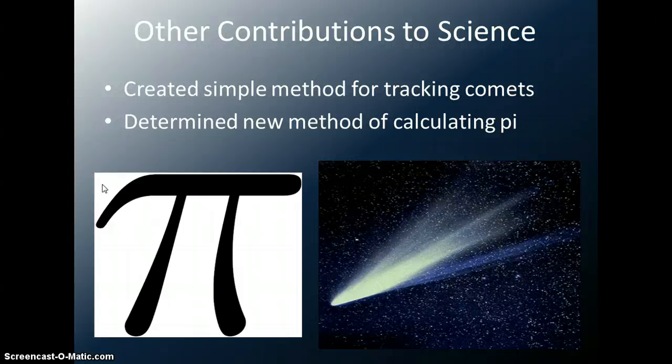Also, Snell came up with a new method for calculating pi. It made it a lot easier than previous methods. Of course, at this time in the 16th and 17th centuries when Snell lived, it was still a very rough practice and could not compare with the technology that we have today.